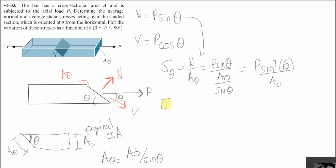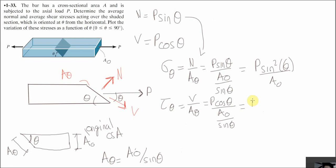Now for the shear stress: the shear stress in the inclined section is V over A_theta, which equals P cosine theta over A divided by sine theta. So the average shear stress in the oblique area will be P cosine theta sine theta over the original area A.